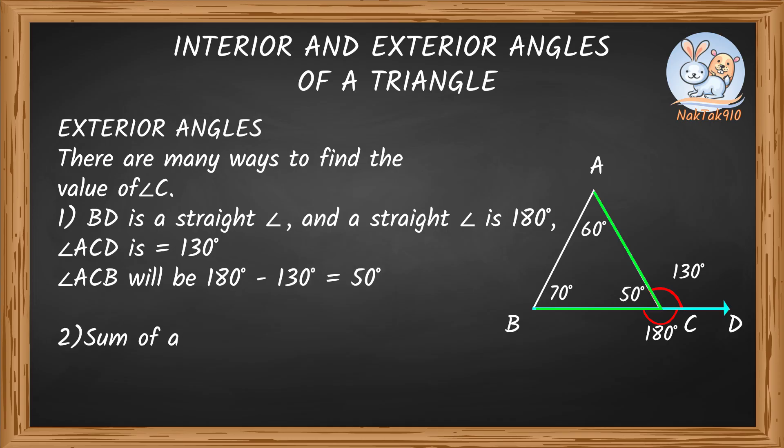Method 2: Sum of all angles in a triangle is 180 degrees. So 60 degrees plus 70 degrees equals 130 degrees. 180 degrees minus 130 degrees equals 50 degrees.